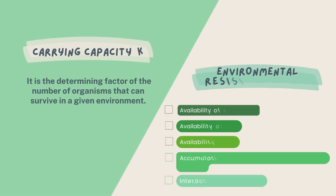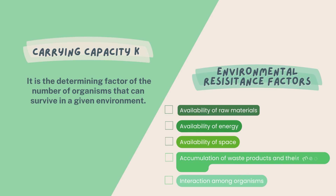Carrying capacity K is a determining factor of the number of organisms that can survive in a given environmental area. There are five environmental resistance factors that set the carrying capacity K: availability of raw materials, availability of energy, availability of space, accumulation of waste products and their means of disposal, and lastly, interactions among organisms.